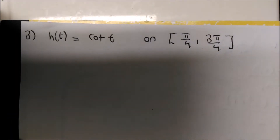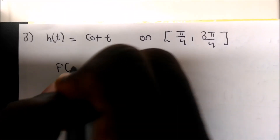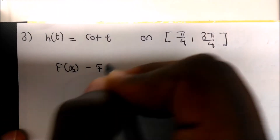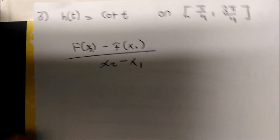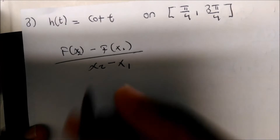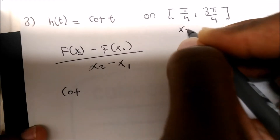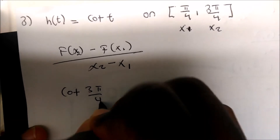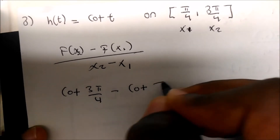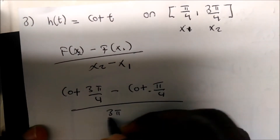Let's do one more example: the average rate of change of a trigonometric function. This is where knowing your unit circle is important. Again using the formula — f(x2) minus f(x1) over x2 minus x1 — and labeling x1 = π/4 and x2 = 3π/4.